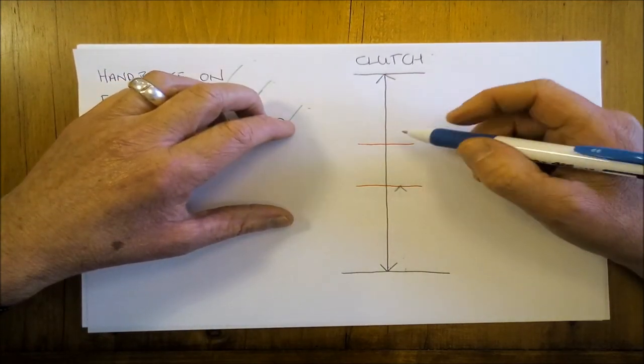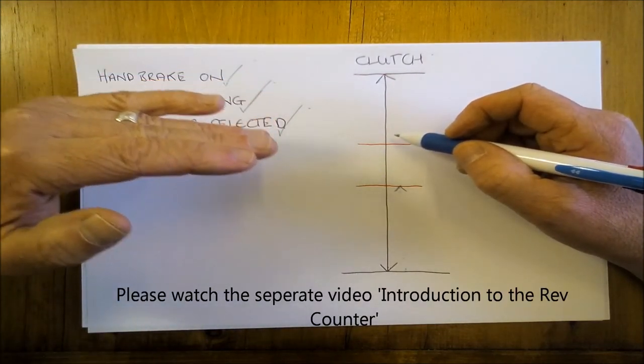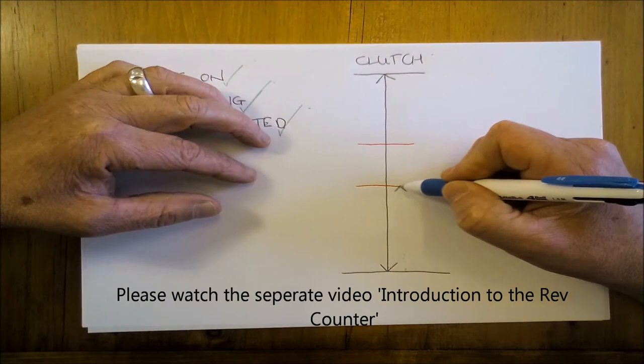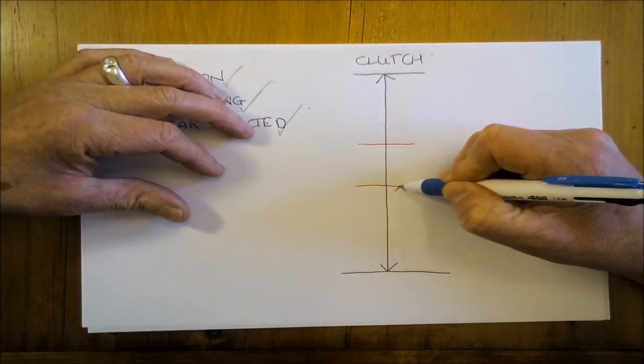The rev counter, which on my car is the dial on the left hand side, the revs will actually drop off slightly as well. So when that starts to happen, it's about trying to recognize when that's happening. When you get to that point, just stop your foot.